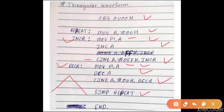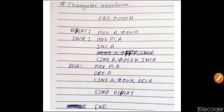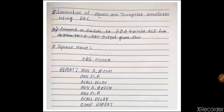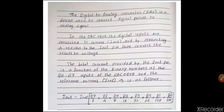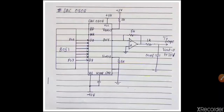A SJMP repeat instruction repeats both loops, giving you a continuous triangular wave output. These are the very basic programs using DAC — the digital to analog converter. I hope you all understand the use of DAC in digital to analog conversion. Thank you very much.